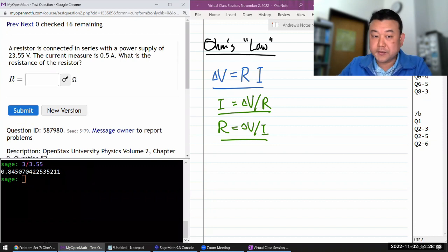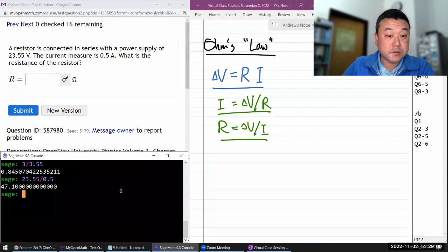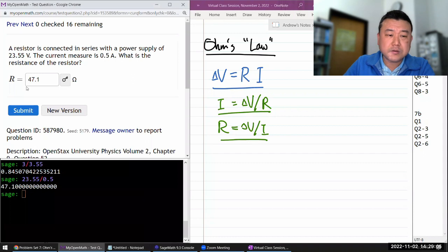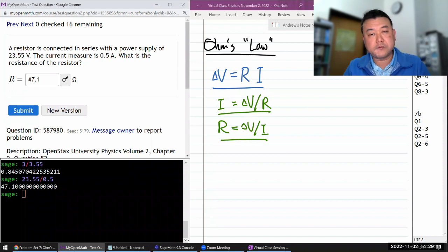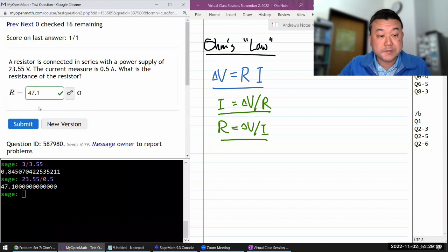Okay, so here it says a resistor is connected in series with a power supply, we are given voltage and current and asked for resistance. That's this equation we should be using. So voltage of 23.55 divided by the current 0.5. Okay, so 47.1 ohm. Yeah, that seems about right. This is not a large resistance. The typical value of resistance you see in a circuit is like a kilo ohm. So this is on the low side, and with the moderate amount of voltage, your current is less than an ampere.